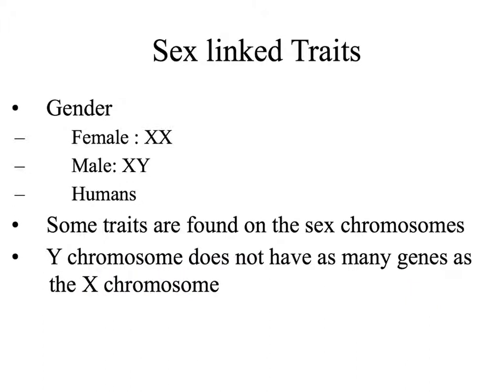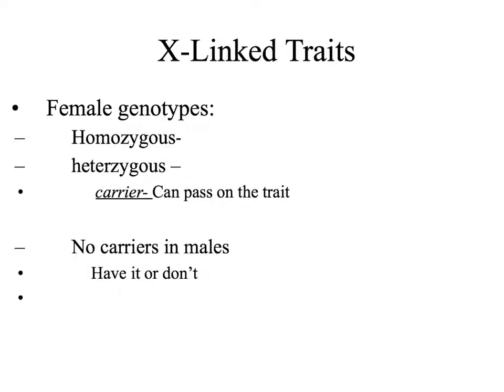Last unit, we talked about sex chromosomes. Remember, females have two X chromosomes, and males in humans have an X and a Y chromosome. X chromosomes are much larger than our Y chromosomes, which means that X chromosomes carry more genes than a Y chromosome. When we look at genotypes of X-linked traits — traits found on the X chromosome only — we see that females can have homozygous or heterozygous genotypes. When writing these genotypes, we need to keep track of our sex chromosomes. Females will always have two X's.